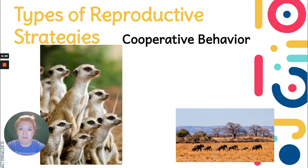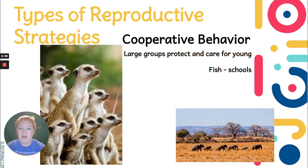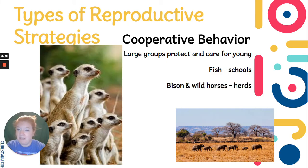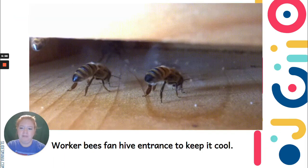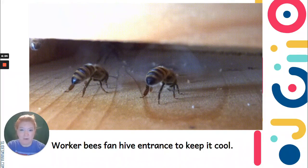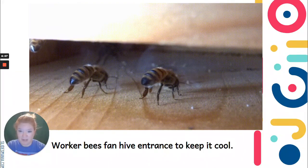There's also cooperative behavior, where large groups protect and care for young. A lot of times the older adults of the group are on the outside and the young are protected in the middle, especially when they are standing together or moving. Fish in groups are called schools; bison and wild horses in groups are called herds; and insects in large groups are called different things — like bees form a swarm. Worker bees will fan the hive entrance to keep it cool if necessary — that's a cooperative strategy, they're working together.